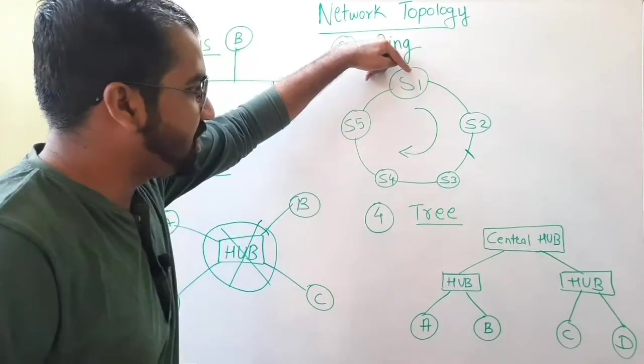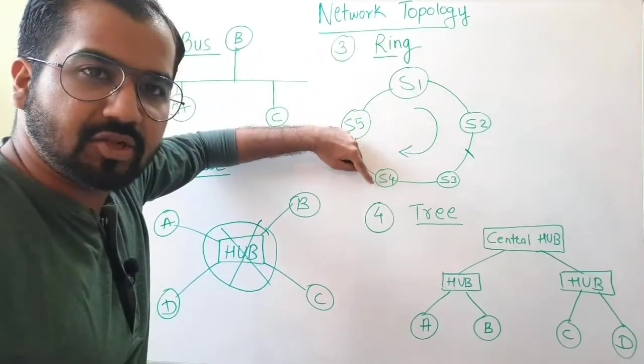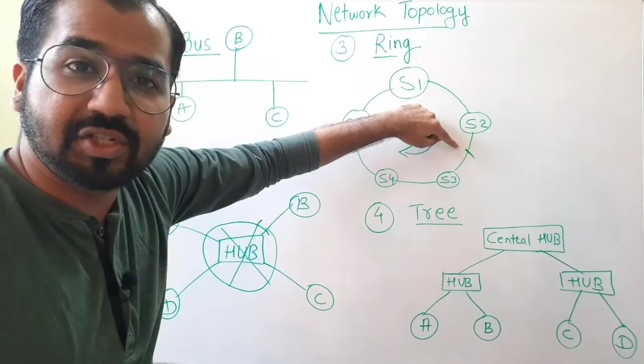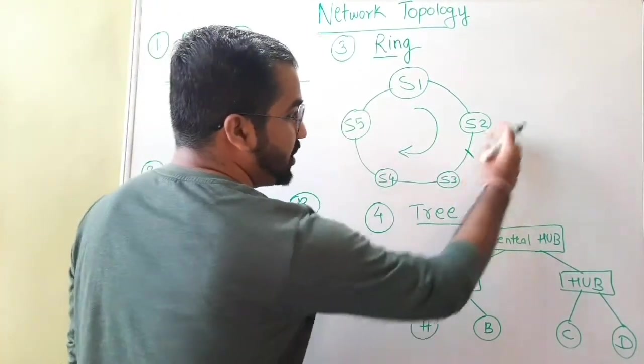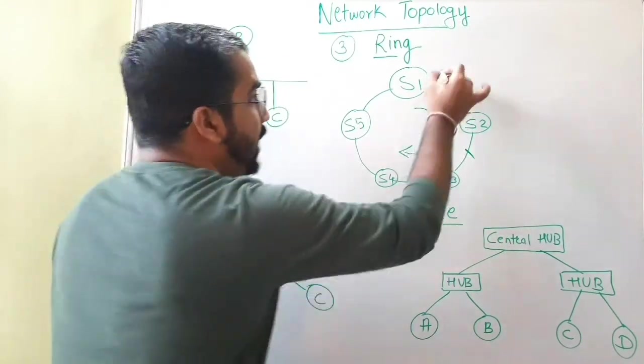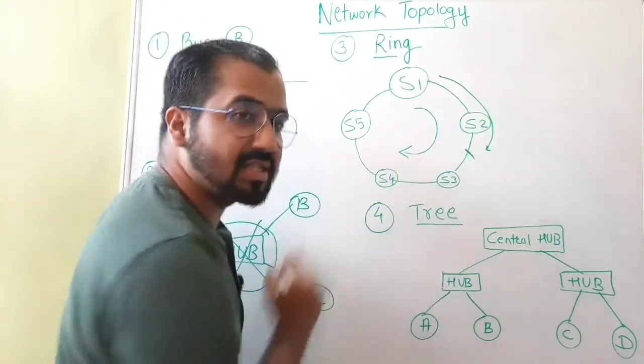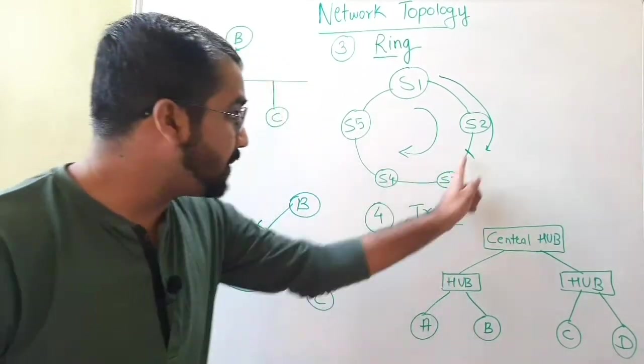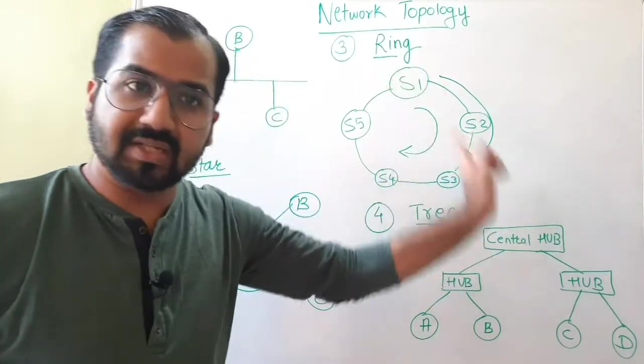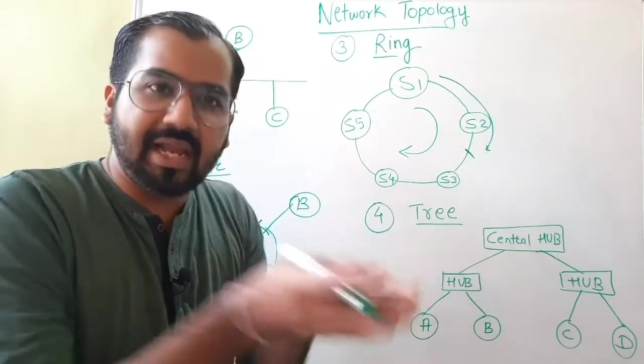As our example was, station one wants to send some message to station four. And let's say we have this situation where the link is braked and there is no connection between this and this part of the network. So the message will come in this direction as shown by this arrow, but it will not reach to this part of the network because there is a breakage, there is a gap.